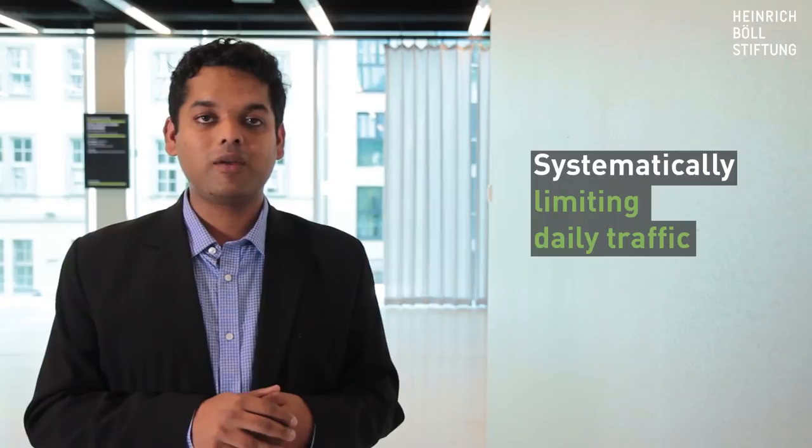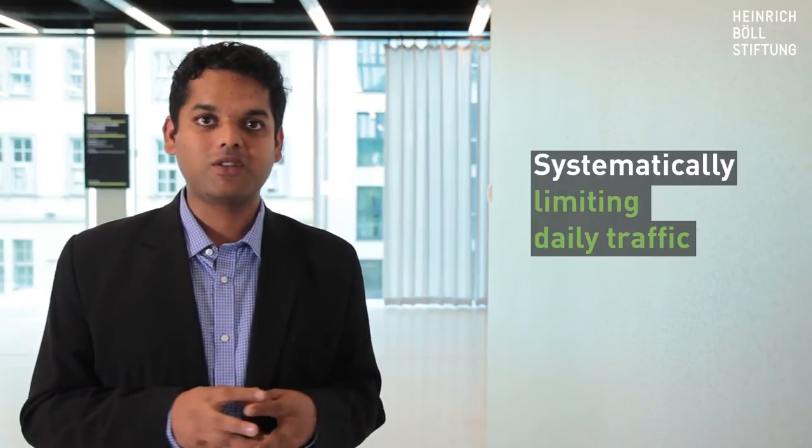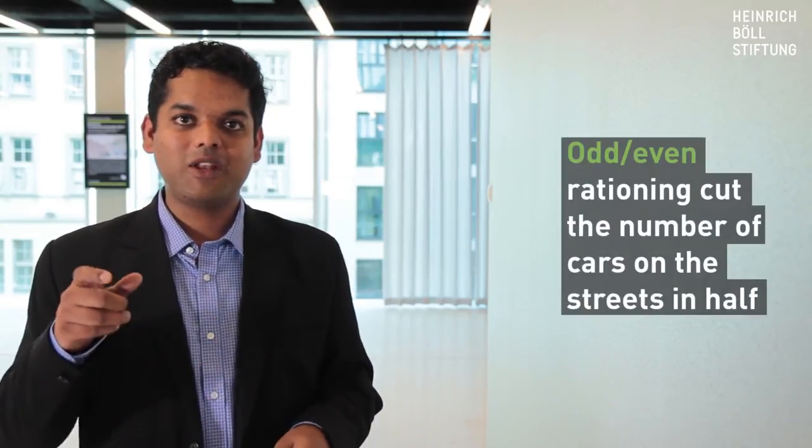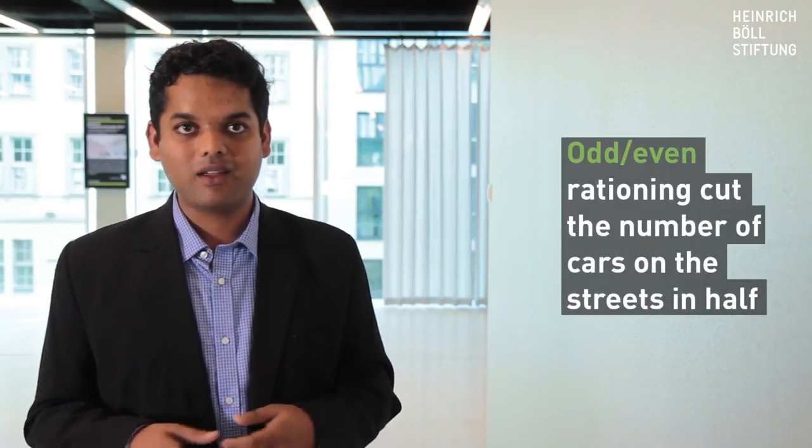We shut down the thermal and coal power plants in Delhi that provided electricity and made alternative arrangements. We also took a decision of implementing odd-even scheme, which is a road rationing scheme where number plates with odd numbers would ply on odd days and number plates with even numbers would ply on even days.